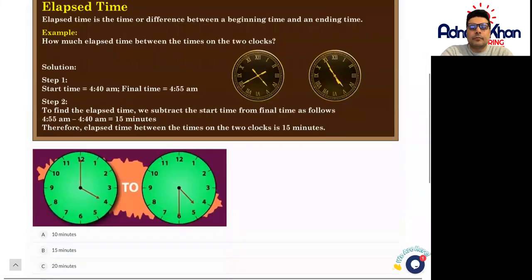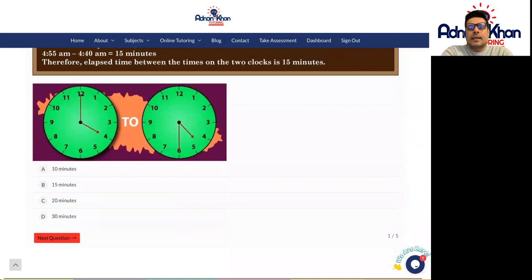That's exactly what you'll need to do with the rest of the questions. You can see the first clock here, the first clock says four, four o'clock and the second clock says 4:30. So how much time has elapsed between four o'clock and 4:30? How many minutes difference in between?